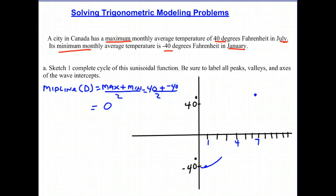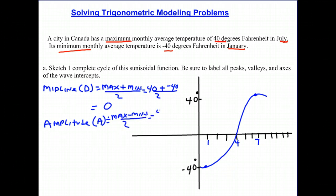We can see the amplitude is 40. If you can't see that, we can use our formula. The amplitude, which gives us our value of A, is the max minus the min over 2, which gives us 40 minus negative 40 over 2, which gives us a value of 40.